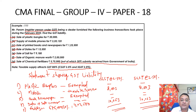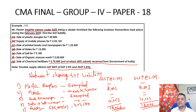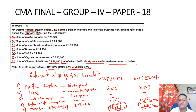Total liability under CGST would be rupees 18,066, and SGST will also be rupees 18,066. Since he does not have any input tax credit, the net liability will be rupees 18,066 each under CGST and SGST, which is to be paid in cash.